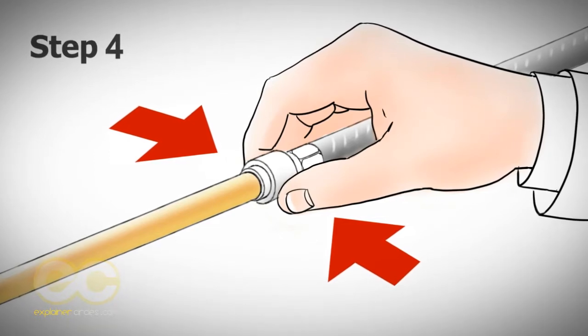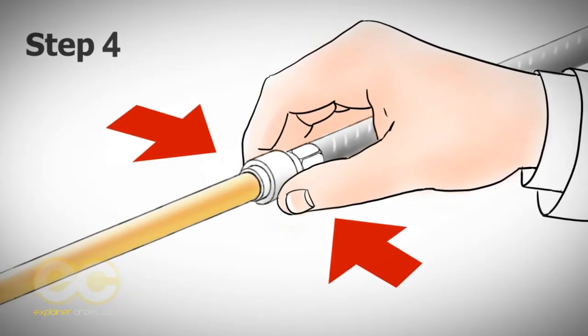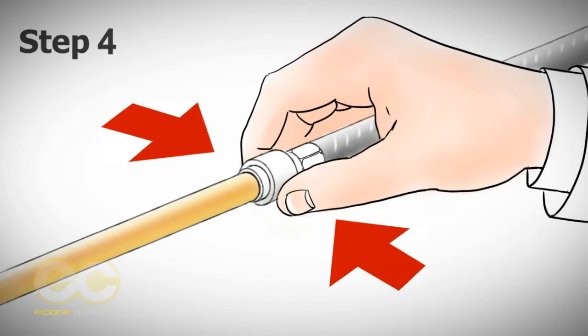Step 4: To disconnect, push the collet square against the face of the fitting by using fingers and pull the pipe and fitting away from each other.